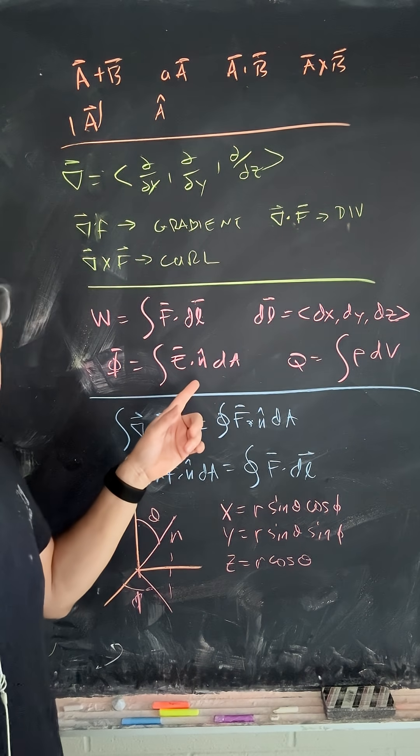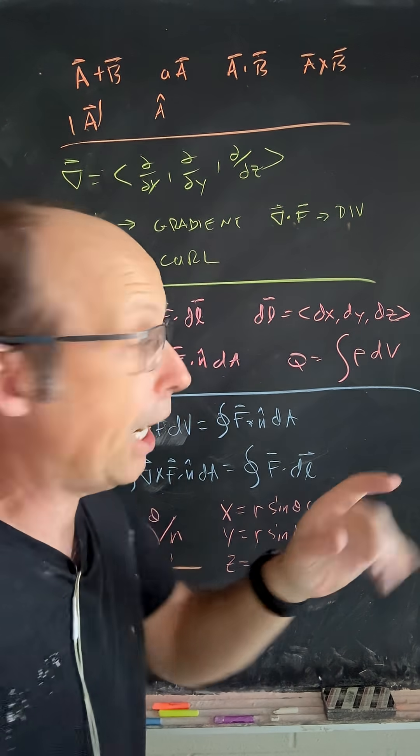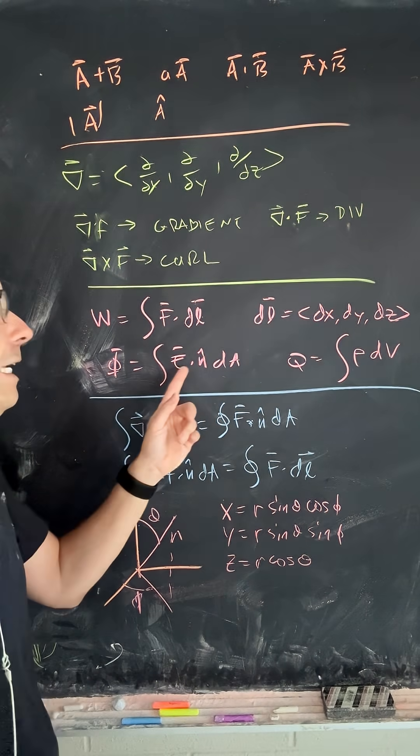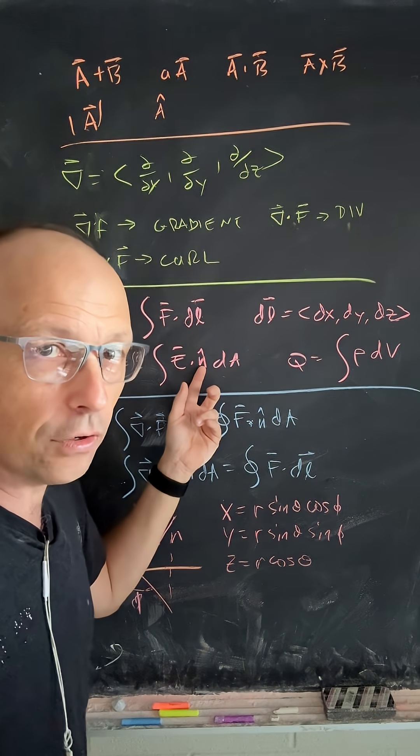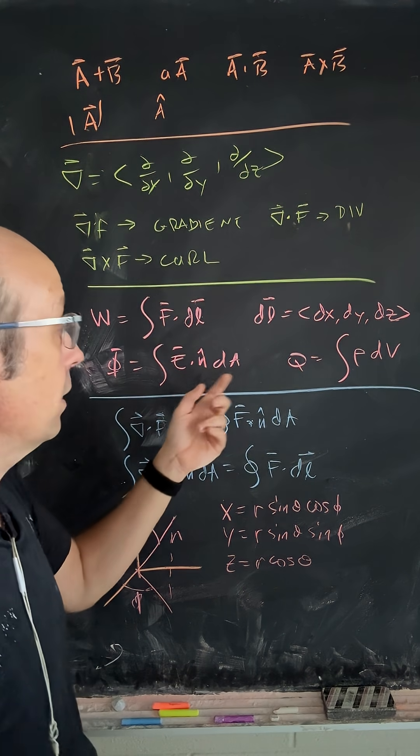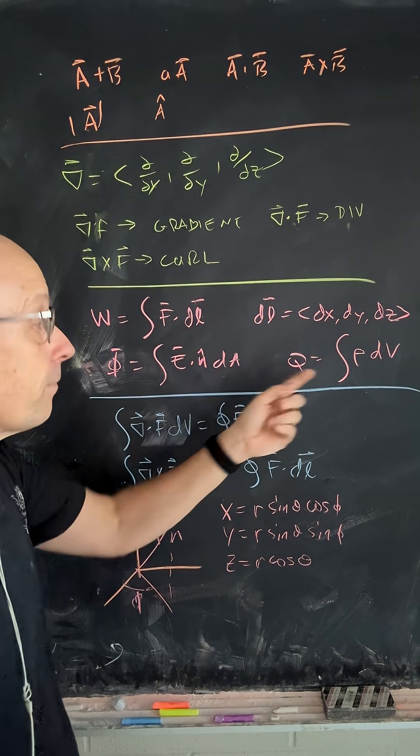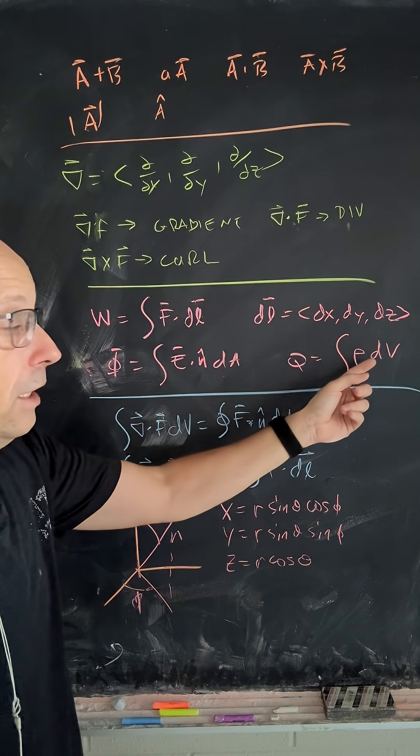We have a surface area integral. You're not going to do anything complicated. You're going to do simple ones. But flux is one. E dot n hat. n hat is a unit vector perpendicular to the surface. And then you do the surface area integral. And then a volume integral is just over the volume.